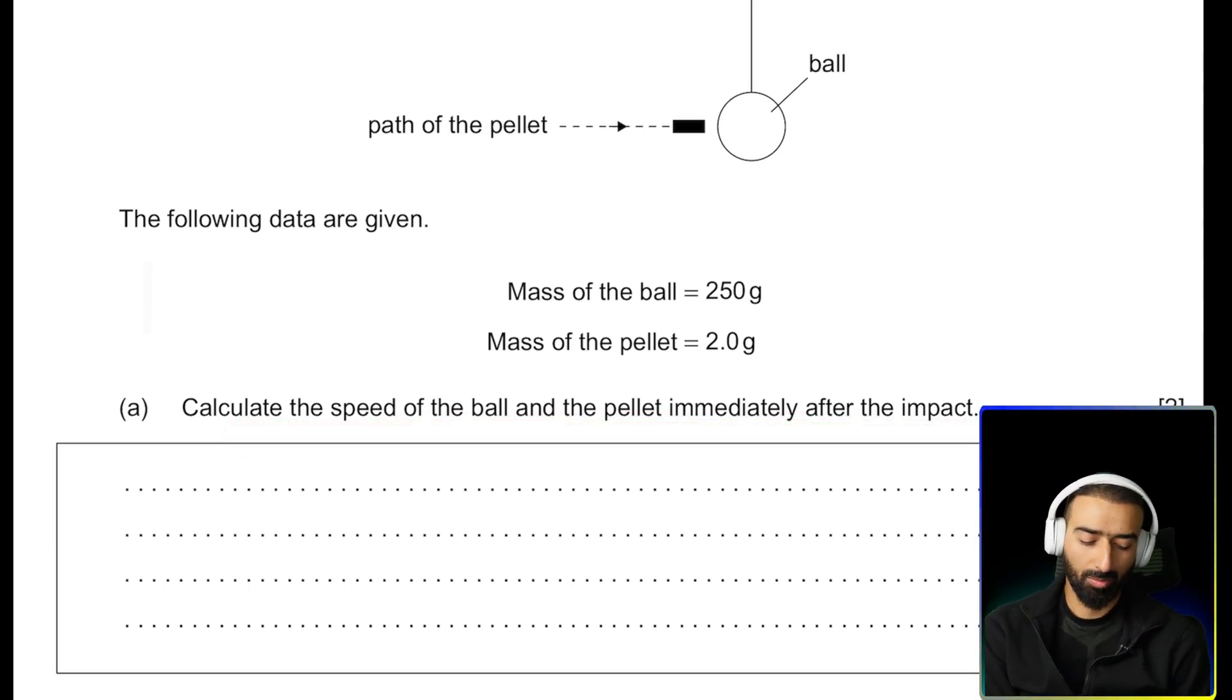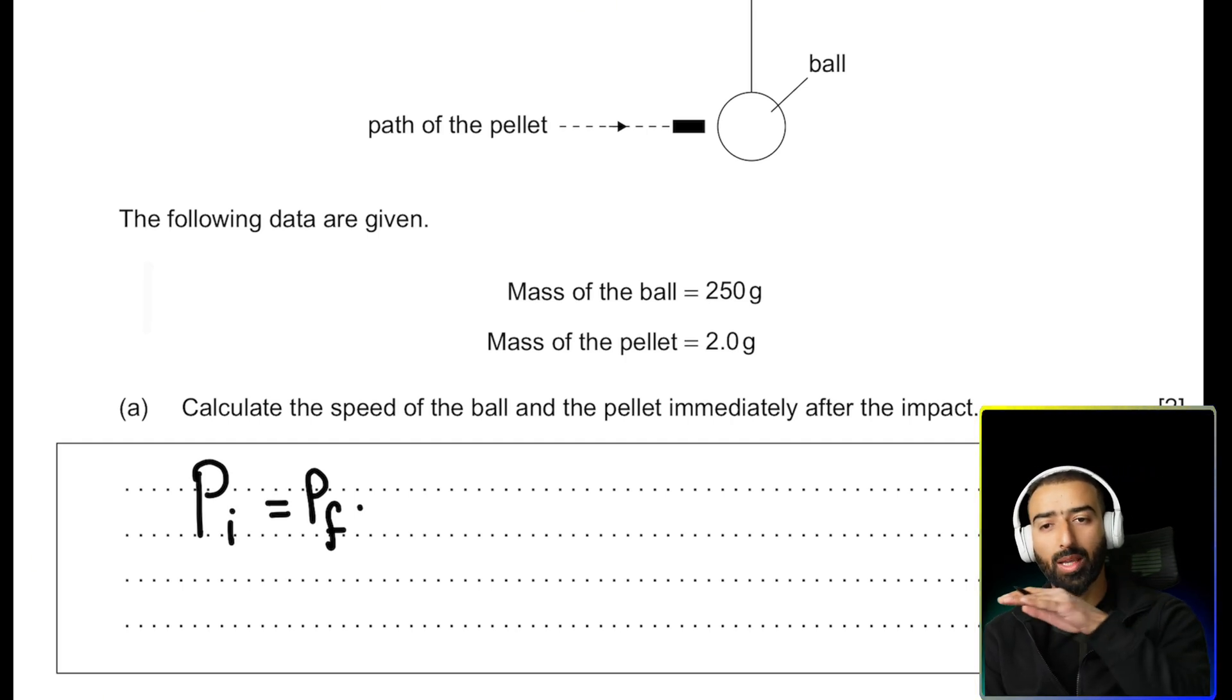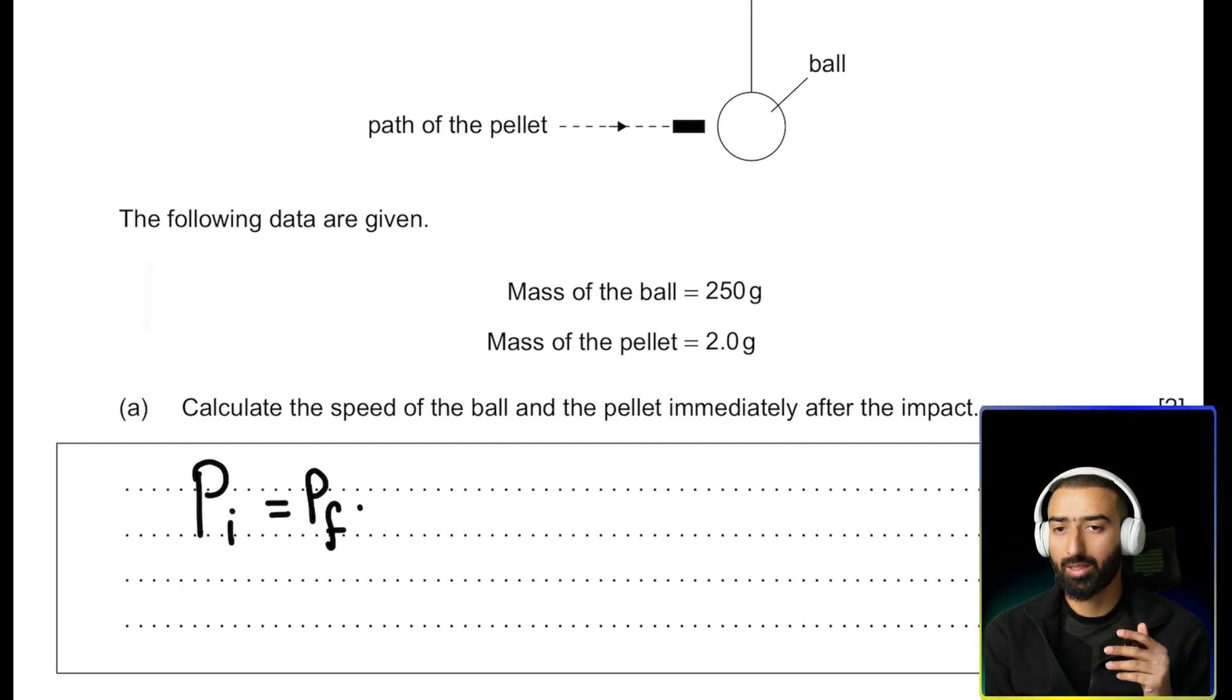Okay, to solve this problem, we can use momentum conservation. Momentum conservation states that the initial momentum of a system equals the final momentum of a system. We can use momentum conservation here because there is no external horizontal force. So momentum must be conserved horizontally.